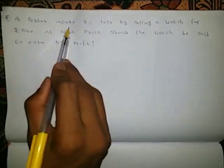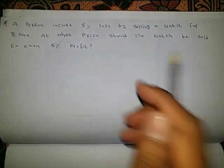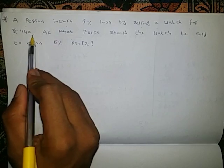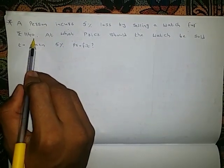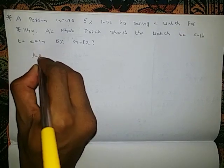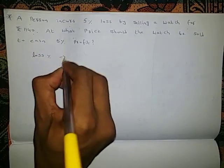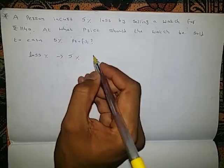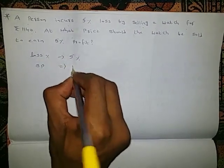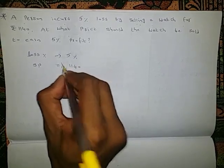A person incurs 5% loss by selling a watch for 1140 rupees. So in this case, loss percentage is given as 5%, and selling price is given as 1140 rupees.